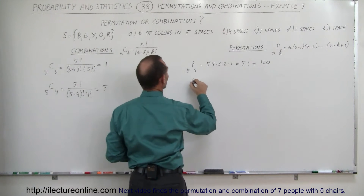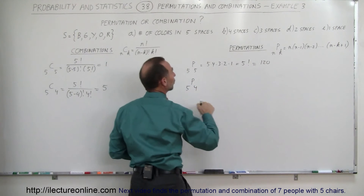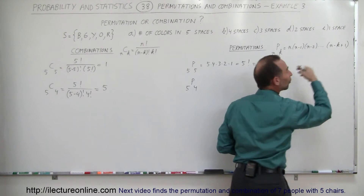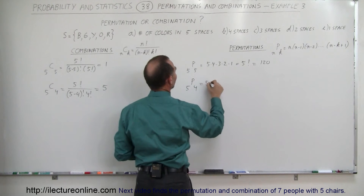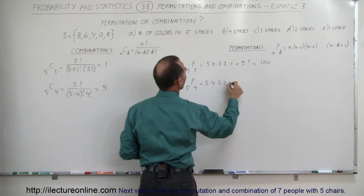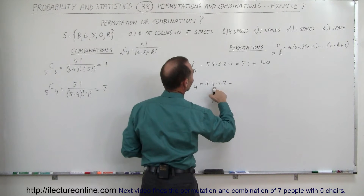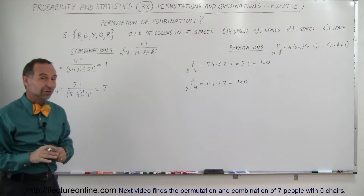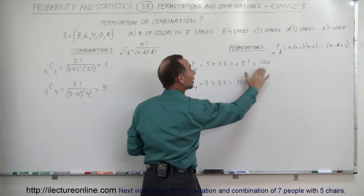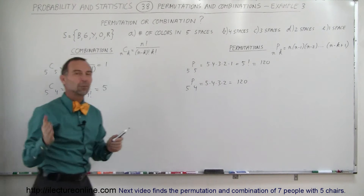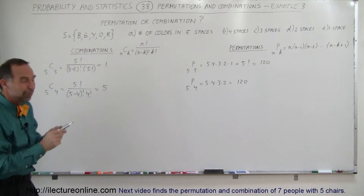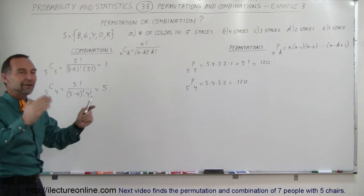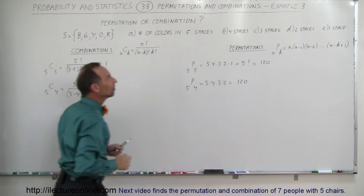For the number of permutations P(5,4): putting four in gives five minus four equals one, plus one is two, so we end at two. This becomes five times four times three times two, which is again 120. So even with only four spaces and five different colors, the number of permutations did not change — you always have one color left out, so it doesn't matter, and the number of permutations stays the same.